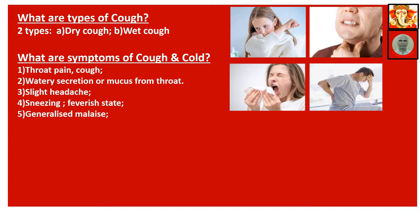What are the types of cough? Two types: dry cough and wet cough. What are the symptoms of cold? Number one: throat pain, cough. Number two: watery secretion or mucus from the throat. Number three: slight headache. Number four: sneezing, feverish state. Number five: generalized malaise.